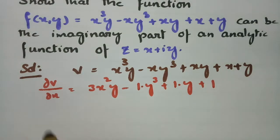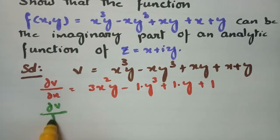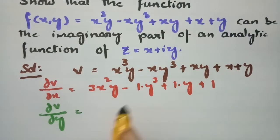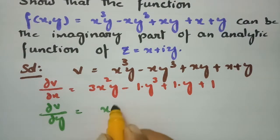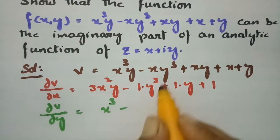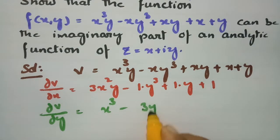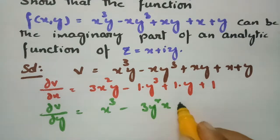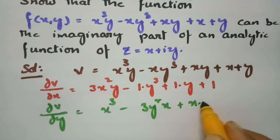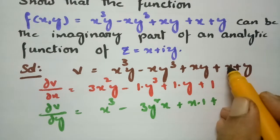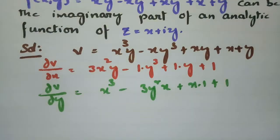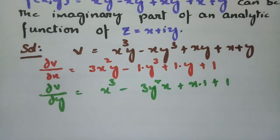Now I am going to take the derivative with respect to y. For v with respect to y: for x cubed y this is x cubed, for xy cubed this is 3y squared x, for xy this is x, for x this is 0, and for y this is 1. So ∂v/∂y equals x³ − 3xy² + x + 1.